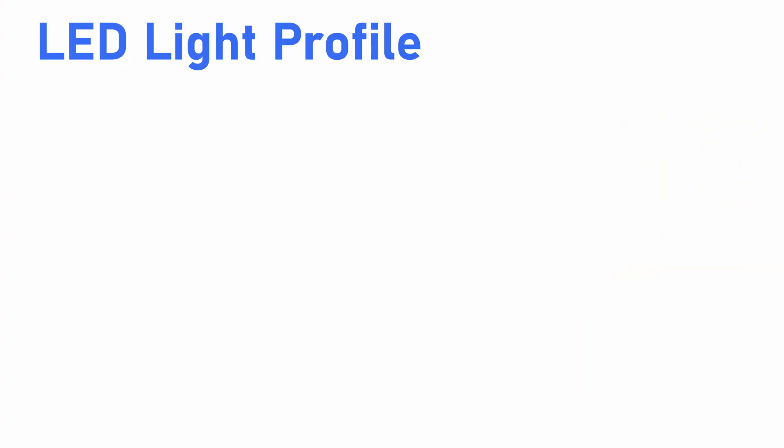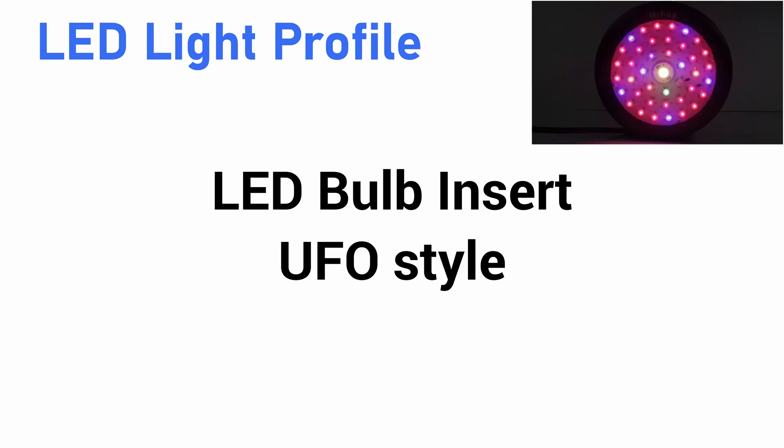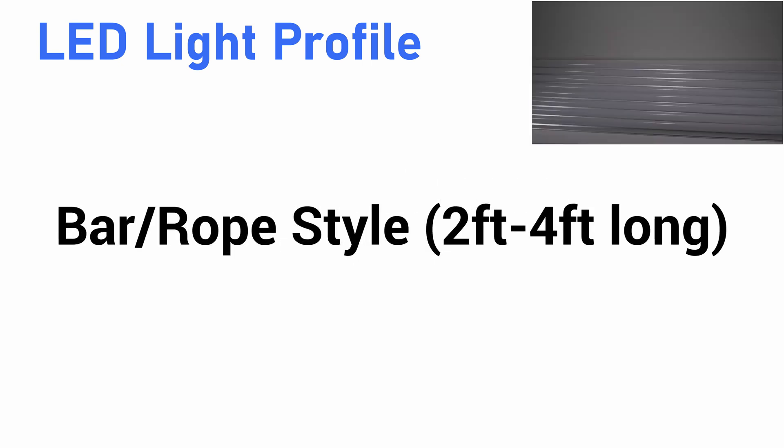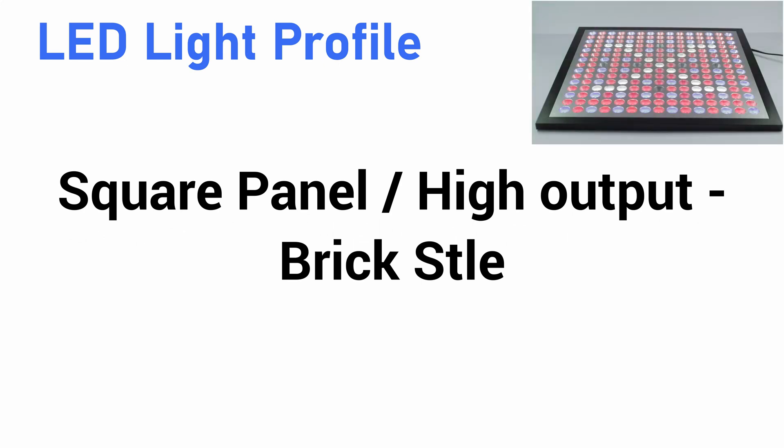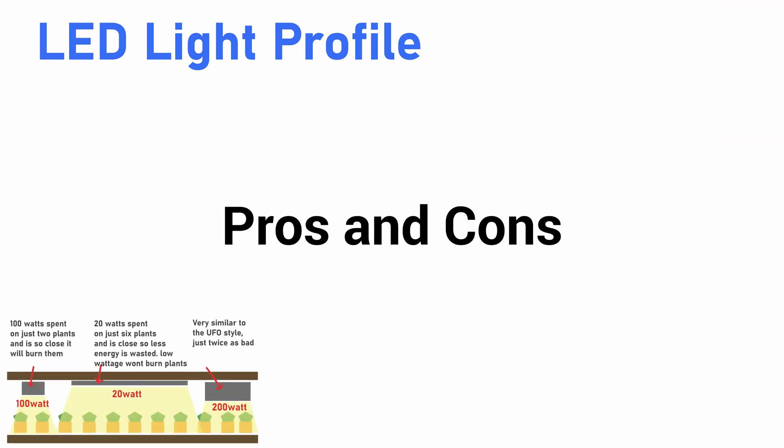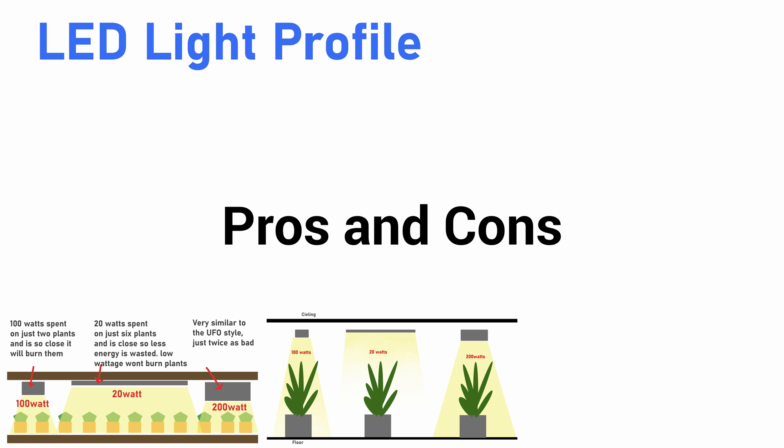This episode will cover three light profiles: one being a bulb or UFO style, two is going to be your bar light or rope lights, and three your kind of high output brick or panel lights. In order to really help you understand where and when they're very useful and not useful, we're going to jump right into three case studies that should illustrate this quite clearly.